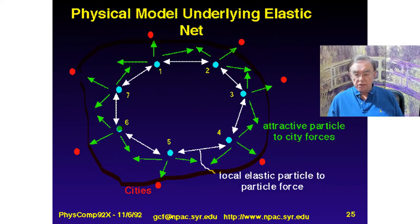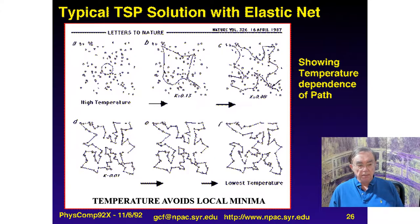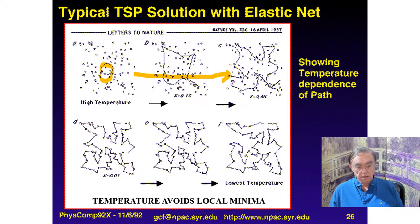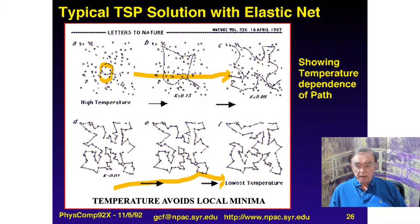This is a heuristic — it doesn't always work. Here's an example showing how, as you increase the force toward the cities, you start off with a solution that is very fast but doesn't actually go through the cities, and then it eventually ends up with a pretty good solution. These are two different problems. This is a famous paper by Hopfield and Tank from 1987, published in Nature.